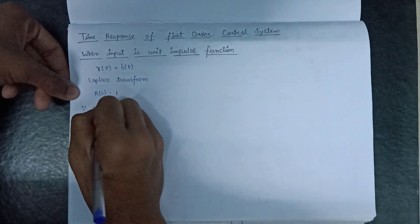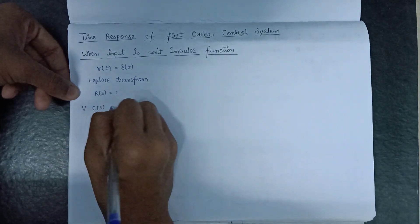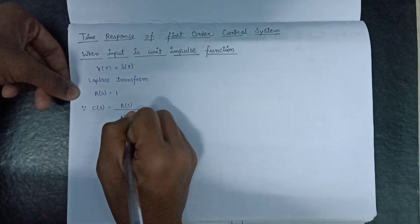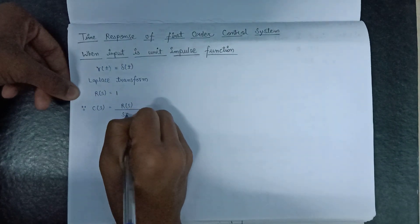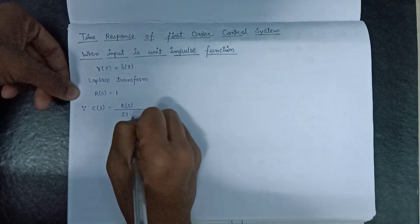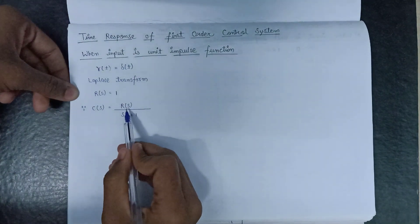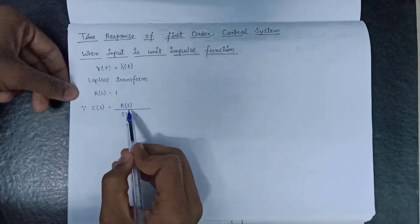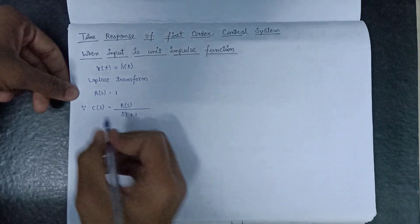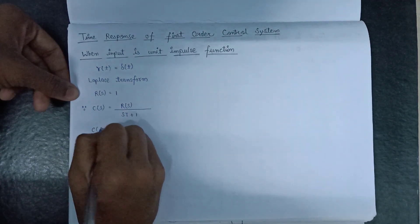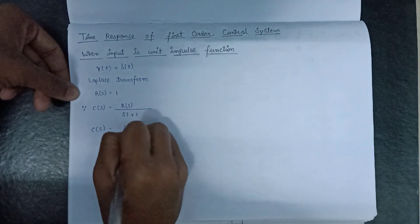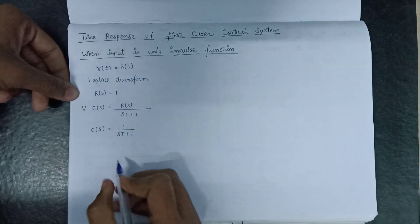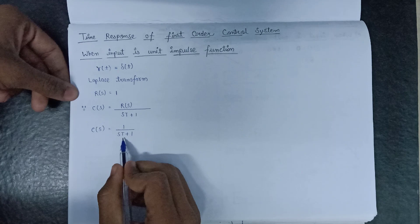We have an expression of C of s that is equal to R of s divided by sT plus 1. Now substituting the value of R of s equals to 1 in this expression, we get the value of C of s as C of s equals to 1 over sT plus 1.